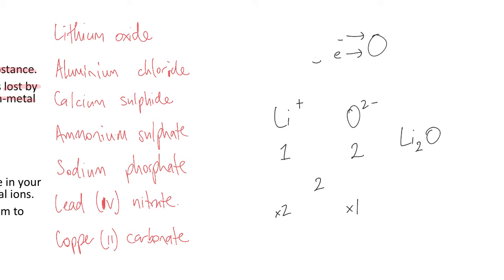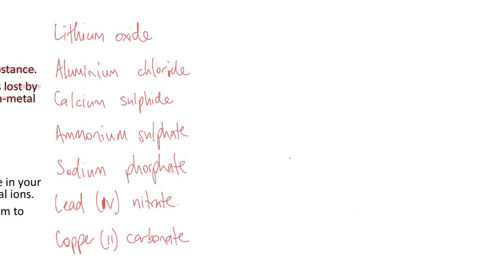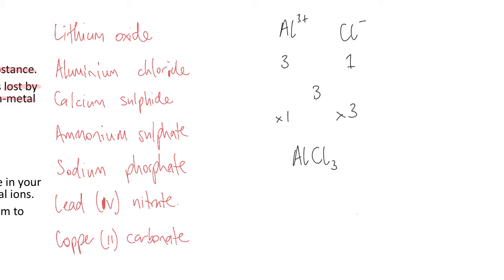Let's do aluminium chloride. Hopefully we remember that the ion charge for aluminium is Al3+, and for chloride it's Cl−. The magnitude of charge is 3 and 1. The lowest common multiple is 3. I have to times this one by 1 and times this one by 3 to get there, so I need three chlorines and one aluminium. The formula is AlCl₃. When you multiply something by 1, you don't need to put any subscript in.